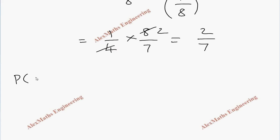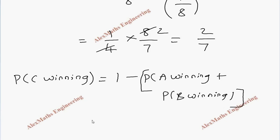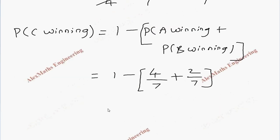Now for finding P of C winning, we don't have to write the series. Instead, from the total probability 1, we subtract P of A winning and P of B winning. So 1 minus 4 by 7 minus 2 by 7, after taking LCM, this is 1 minus 6 by 7, which equals 1 by 7.